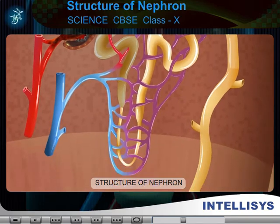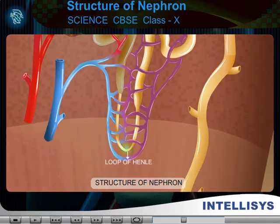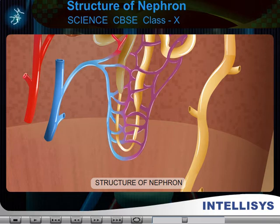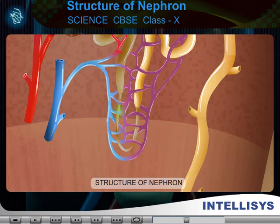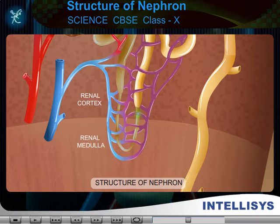2. Loop of Henle. It is a U-shaped tubule. It consists of two portions: the descending limb of Henle and the ascending limb of Henle. At first it is present in the renal cortex, then enters into the renal medulla, and in the last part it is again present in the cortex region.